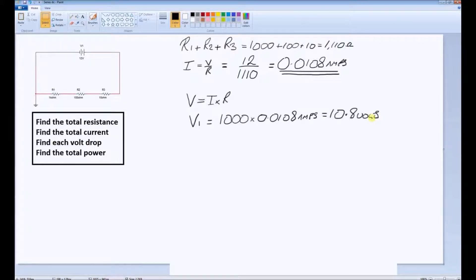Resistance two, R2, is 100 ohms. If we're using the same current, that must mean that the volt drop across the 100 ohm resistor is 1.08 volts.